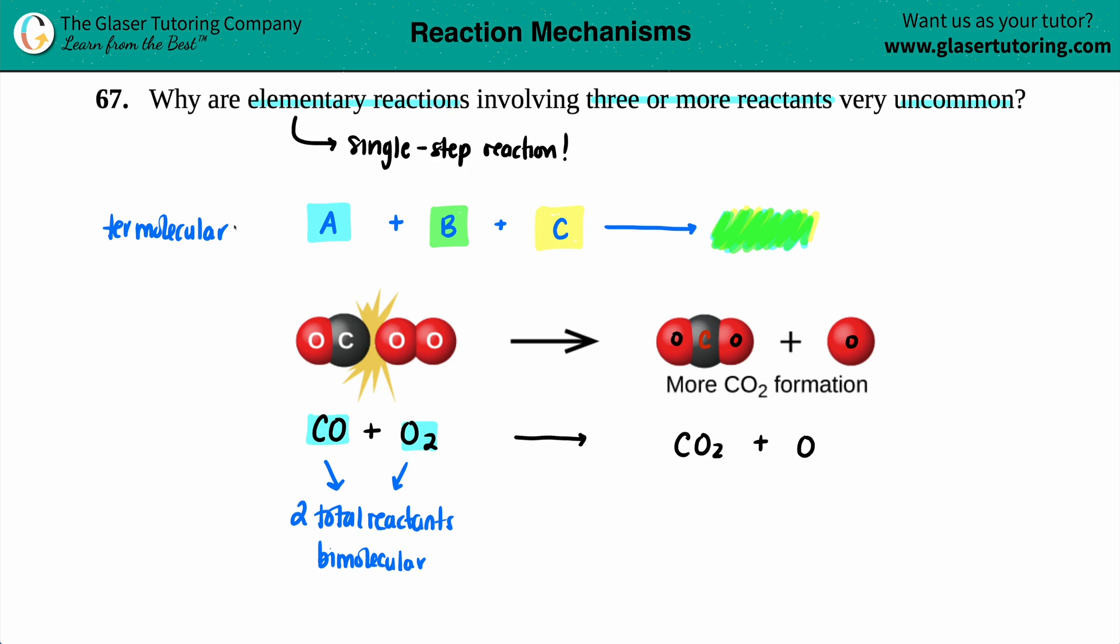And the idea here is why these are very uncommon. Maybe I'll just say that we make ABC. Why these are very uncommon is because the probability of having these three molecules, and maybe what I'll put is we'll put this one at the bottom.